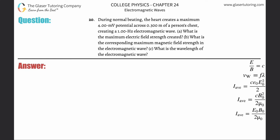Number 20: During normal beating, the heart creates a maximum four millivolt potential across 0.3 meters of a person's chest, creating a one hertz electromagnetic wave. Letter A: What is the maximum electric field strength created?